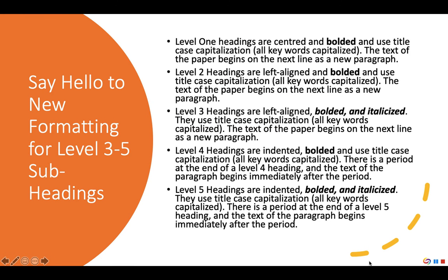Just as in APA 6, in APA 7 you're encouraged to use subheadings to organize your paper. The most commonly used subheadings for student papers — levels 1 and 2 — are exactly the same in both styles. Level 1 headings are centered and bolded with title case capitalization; the text begins on the next line as a new paragraph. Level 2 headings are also bolded but left aligned with title case capitalization, and the text also begins on the next line as a new paragraph.